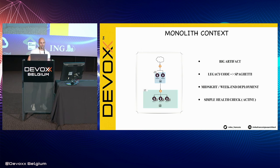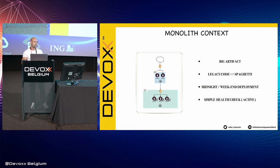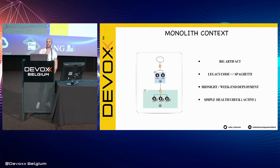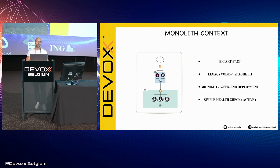You know very well in the context of a monolith, it's a big artifact. Every time when you would like to do a feature, even if it's a small one, you take so much time to do it because you have to build everything. You have regression tests, functional tests, and other things — if you are lucky. And operation teams have only simple health checks; they check only some URLs and don't have good feedback about the application.